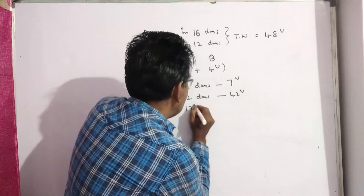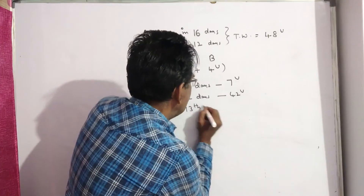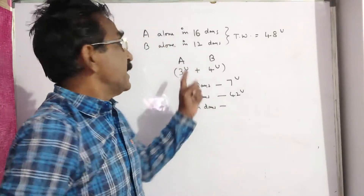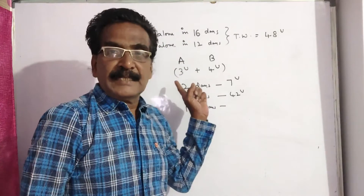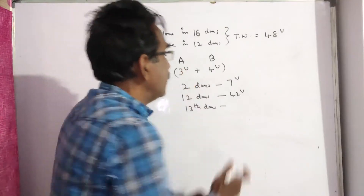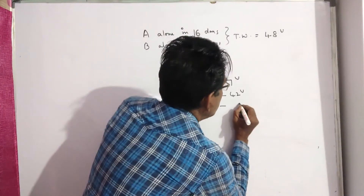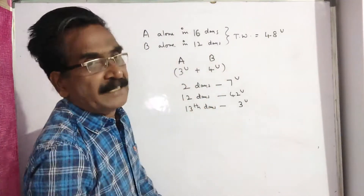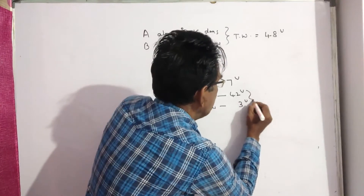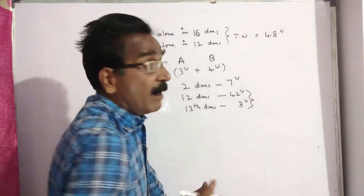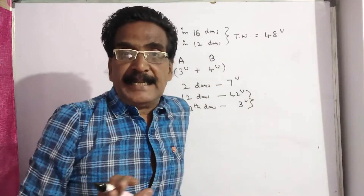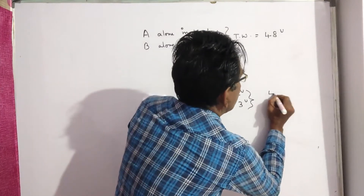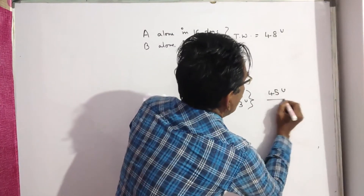On the thirteenth day, A comes and does 3 units of work. After 13 days, 42 plus 3 = 45 units of work is completed.